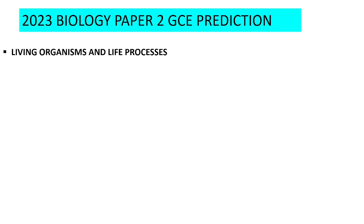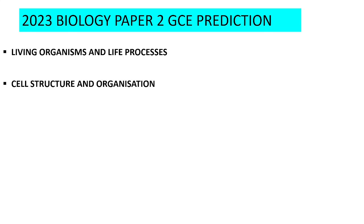The first topic is Living Organisms and Life Processes. This is a topic I consider likely to be present in the 2023 Biology Paper 2 GCE. Under this topic there are subtopics — for example, characteristics of living things. Those who require a detailed course outline can request one for 10 kwacha; I'll give the number at the end of this video.